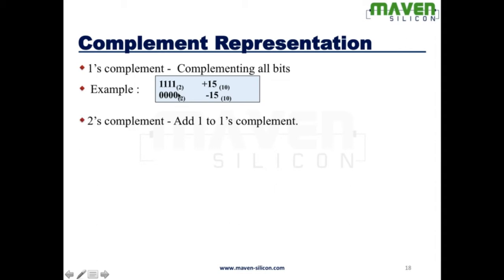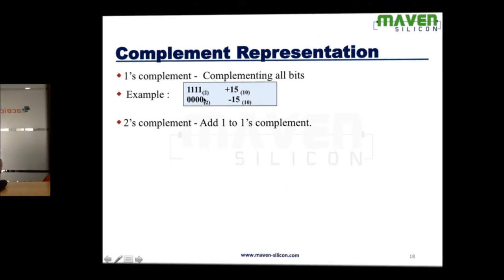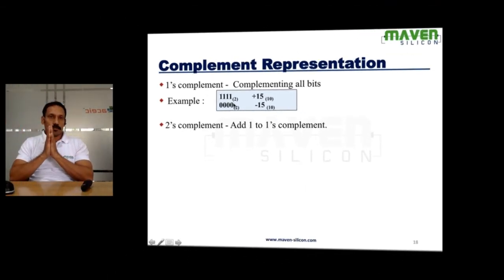But still, you may find similar issues when it comes to defining 0, even in 1's complement. So that's why we go for 2's complement. When it comes to 2's complement, what we do is we add 1 to 1's complement. That's how we are going to define the negative value.